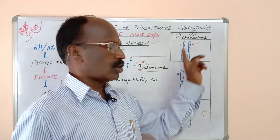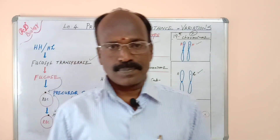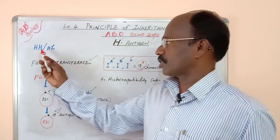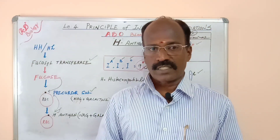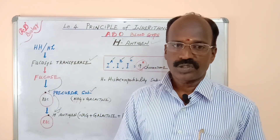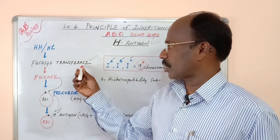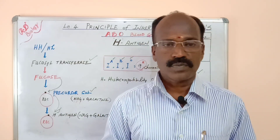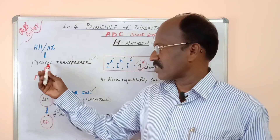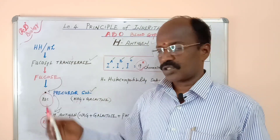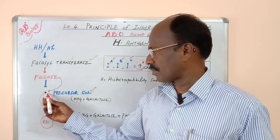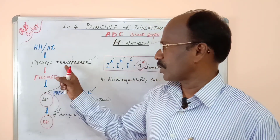Let us take these two genotypes: homozygous dominant (H, H) or heterozygous dominant (H, h). These two conditions actually encode and synthesize an important enzyme called Fucosyl transferase. This Fucosyl transferase is essential to carry fucose, which is a monosaccharide, to the surface of the RBC membrane.